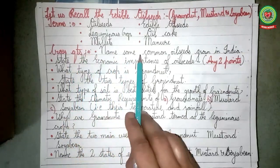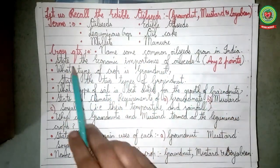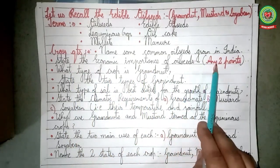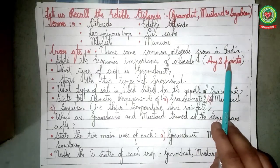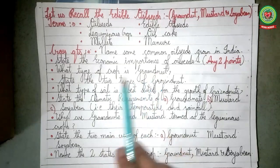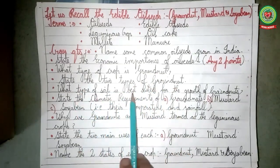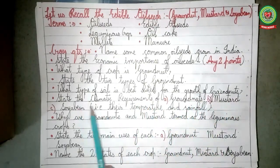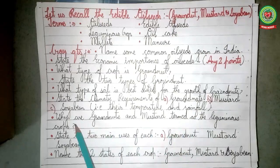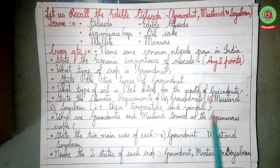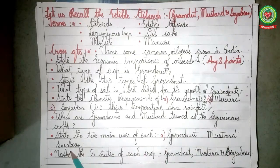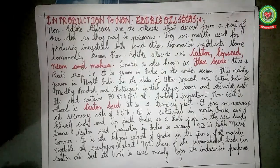Now let us go through cross questions. Name some common oil seeds grown in India. State the economic importance of oil seeds — give any two points. What type of crop is groundnut? State the two types of groundnut. What type of soil is best suited for the growth of groundnuts? State the climatic requirements — temperature and rainfall — of groundnut, mustard, and soybean. Why are groundnuts and mustard termed as leguminous crops? State two main uses each of groundnut, mustard, and soybean. Name two states for each of groundnut, mustard, and soybean.